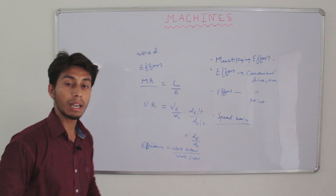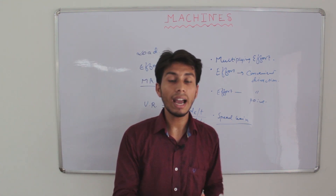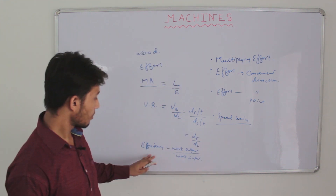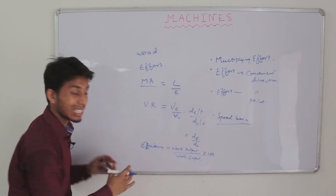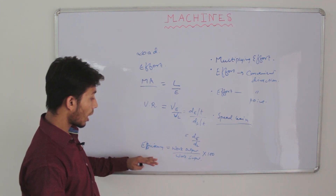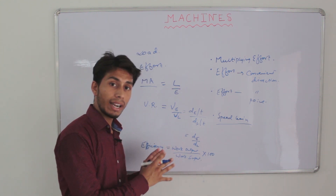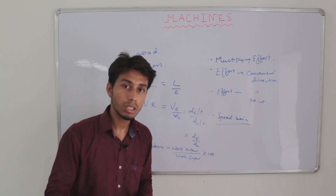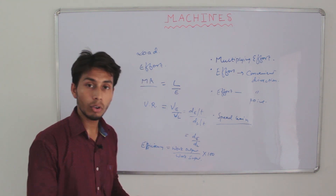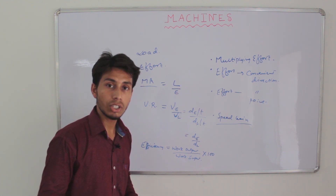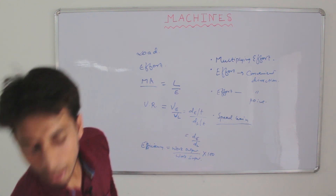Based on efficiency, machines are classified into two categories: ideal machines and actual machines. If we multiply efficiency by 100 we get it as a percentage. A machine with 100% efficiency is an ideal machine — this is hypothetical and not possible in real life. Any machine with efficiency less than 100% is an actual machine.